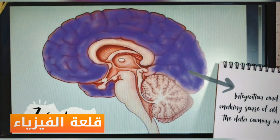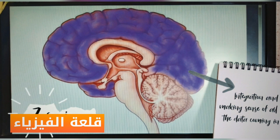Seven, the cerebrum. Its function is integration — basically making sense of all the data that comes in. Neurons are what make up the cerebrum. There are billions and billions of neurons connected to your cerebrum.